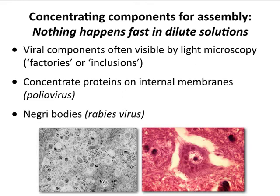A key principle in assembly is that nothing happens fast in dilute solutions. Virus assembly pathways have evolved to concentrate the components so that assembly happens quickly. In infected cells you can often see by light microscopy what we call factories or inclusions — places where assembly is taking place. It doesn't just happen all over the cytoplasm; it happens in very specific foci. That's a way of concentrating components so reactions go faster. An example of a viral factory is shown in the micrograph on the lower right.